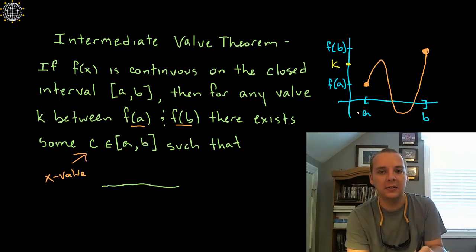That should be noted, this is an x value right here, something on the x axis such that what happens? Well what are we guaranteed for any value k between f(a) and f(b)?